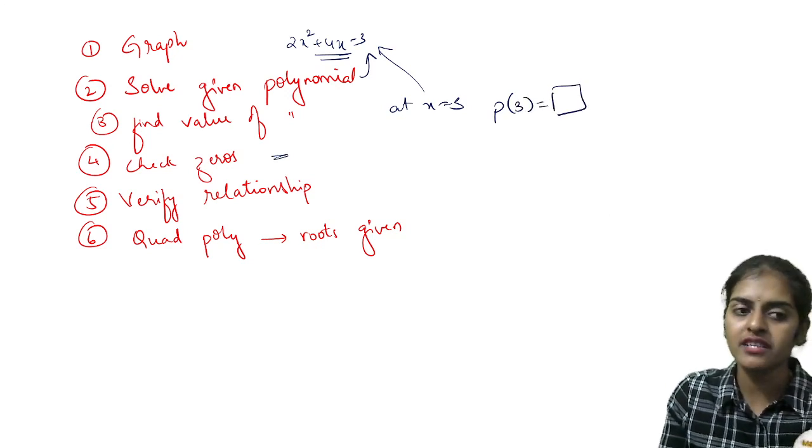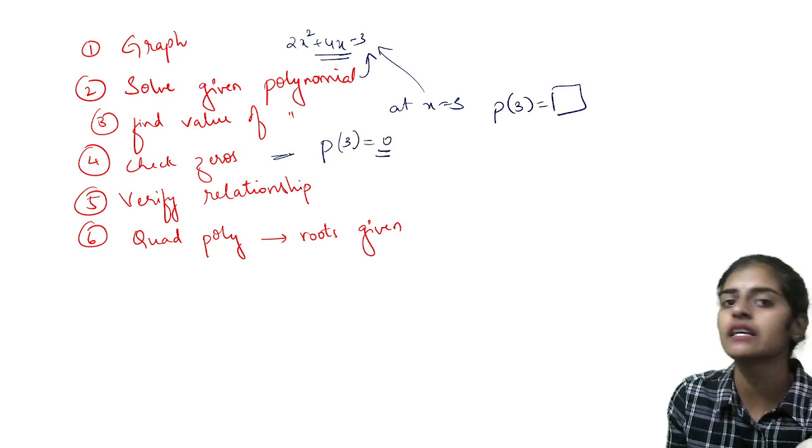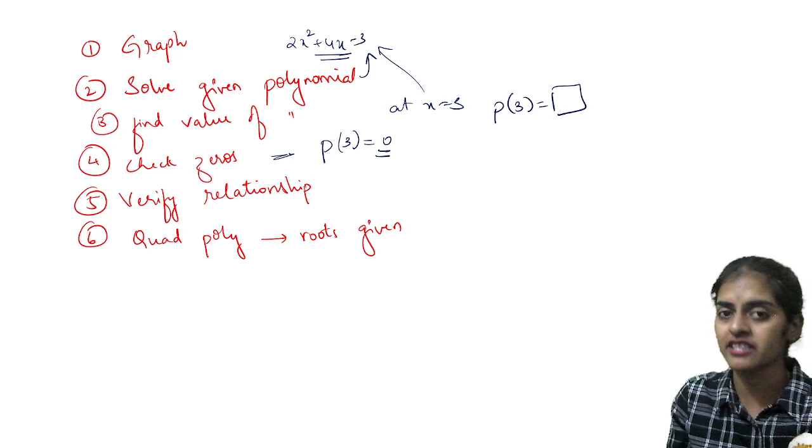Check for zeros means if I substitute 3 in the polynomial and get the answer as 0, then this is called checking for zeros.